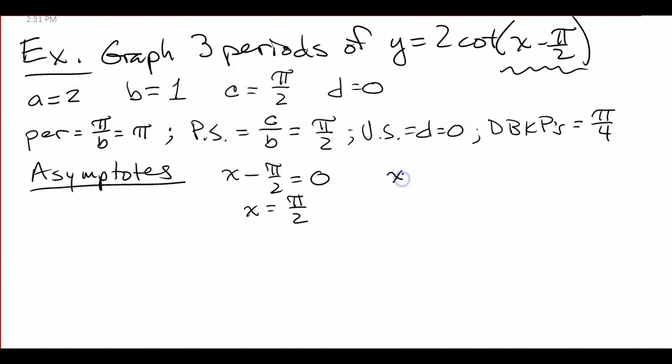And I'm going to set my x minus pi over 2 equal to pi. Careful with your algebra here. I'm going to add pi over 2 to both sides, so 1 pi over 2 plus 2 pi over 2 is 3 pi over 2. So I'm going to have another asymptote at 3 pi over 2.